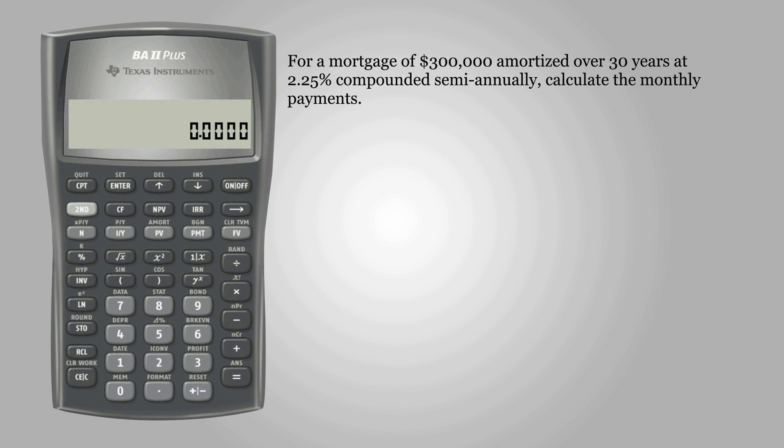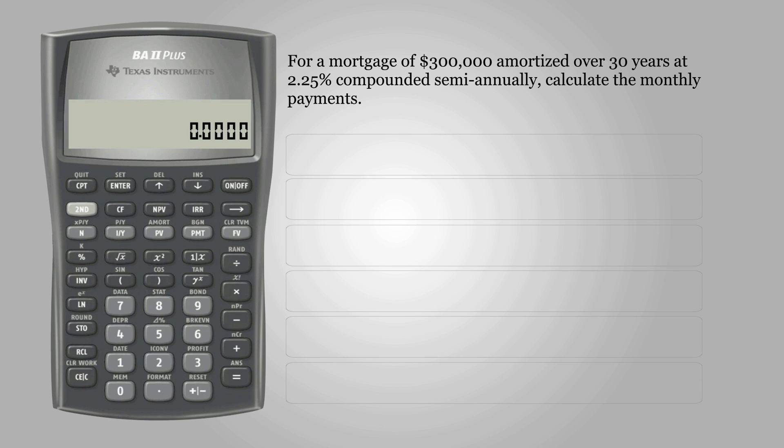The question asks, for a mortgage of $300,000 amortized over 30 years at 2.25% compounded semi-annually, calculate the monthly payments.